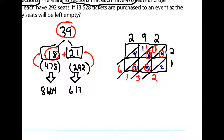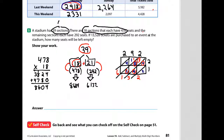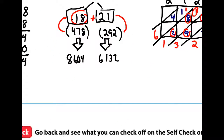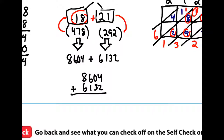Now let's see where we are — I don't think we're done. Going back, the problem asks: if 13,528 tickets are purchased, how many seats will be left empty? We need the total seats in the stadium, so I'm going to add 8,604 plus 6,132. That comes out to 14,736 total seats in the stadium — but we're still not done.